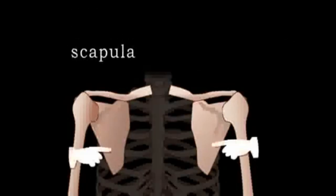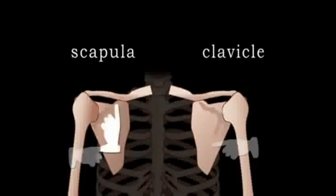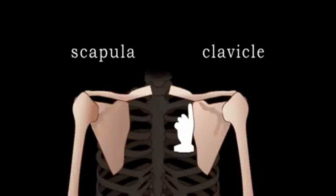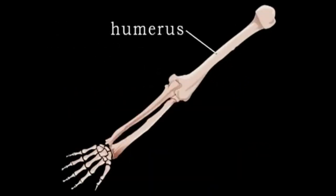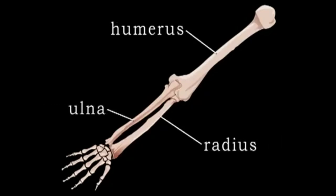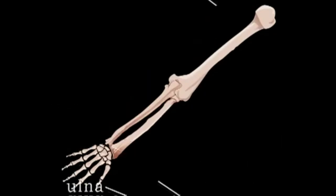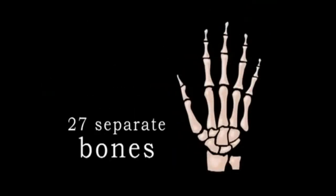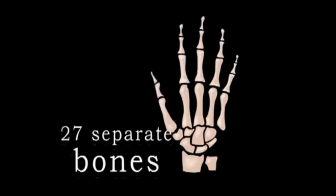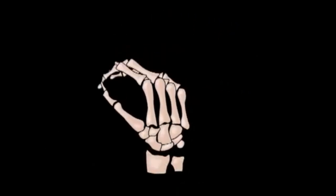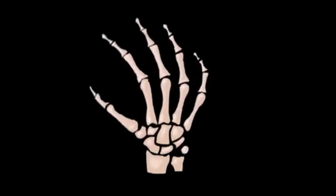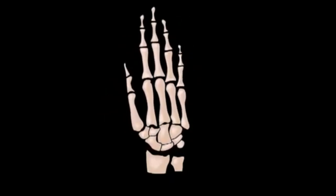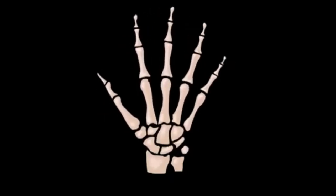The shoulder girdle consists of the scapula, or shoulder blade, and the clavicle, or collar bone. The arm itself is composed of the humerus, or upper arm, and the radius and ulna of the forearm, plus the wrist and hand, which consists of 27 separate bones. Because of this large number of small bones, our hands are capable of more movement than any other part of our body.